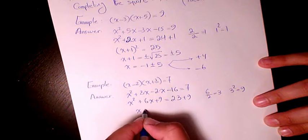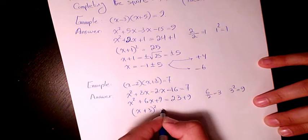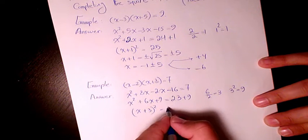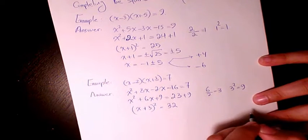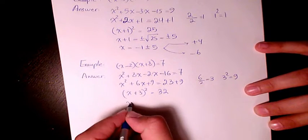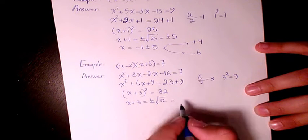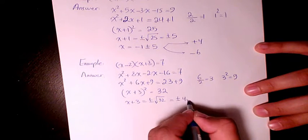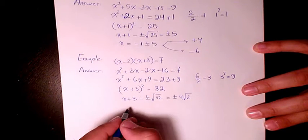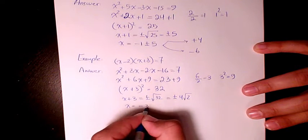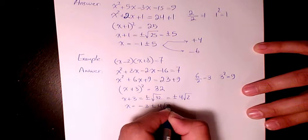That will be x plus 3 to the power of 2. 23 plus 9 is going to be 32. Then you can say x plus 3 equals to plus minus square root of 32, and square root of 32 will be 4 root 2. So the answer will be negative 3 plus minus 4 root 2.